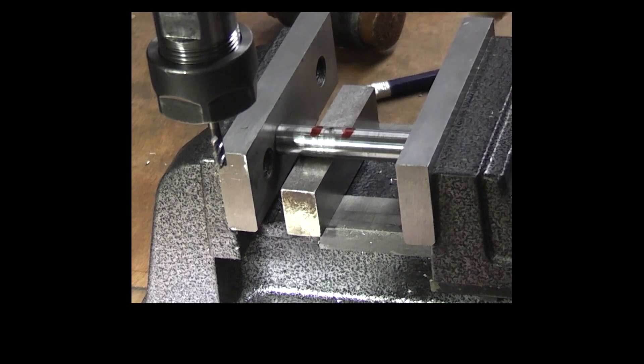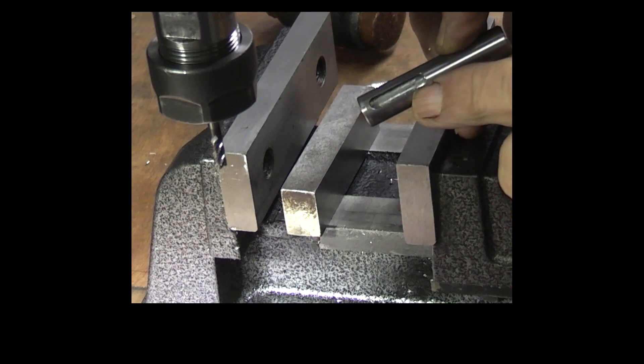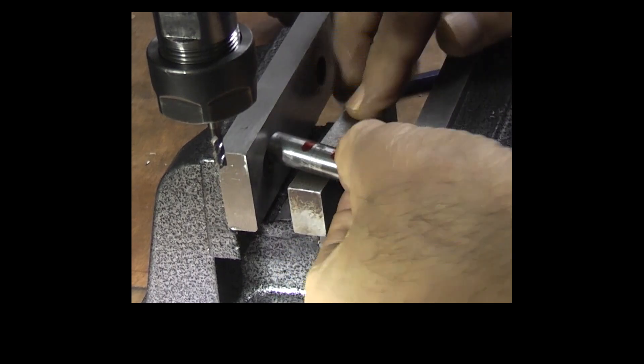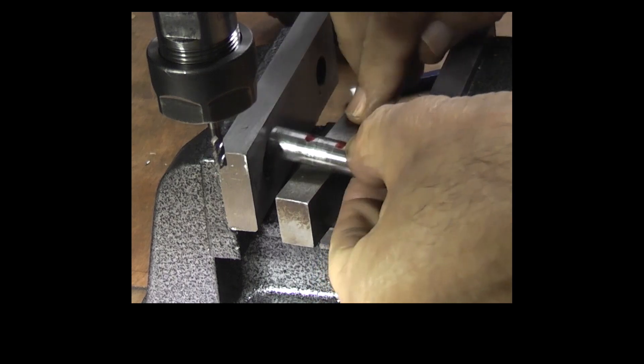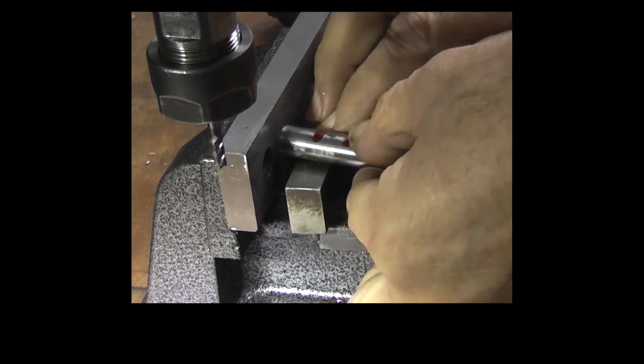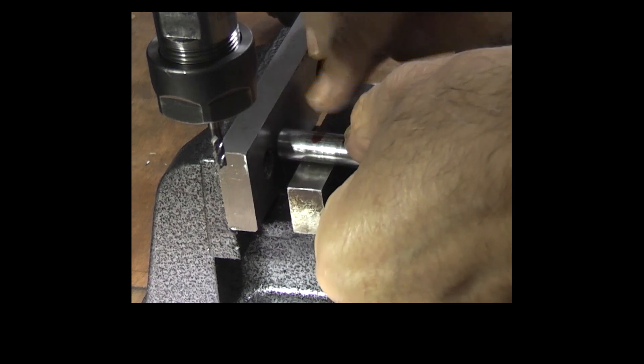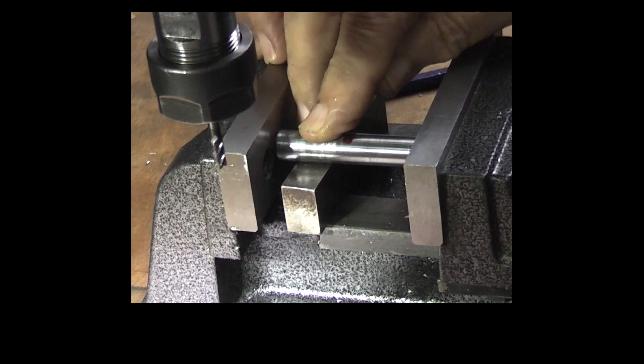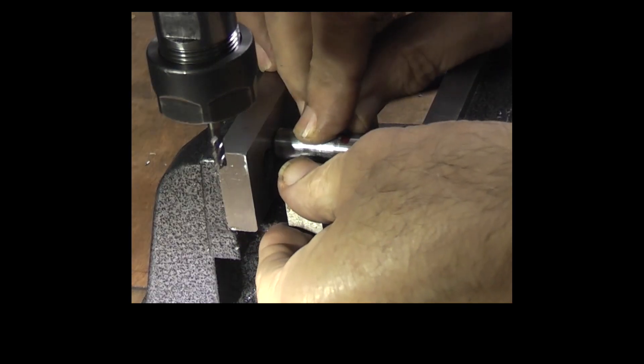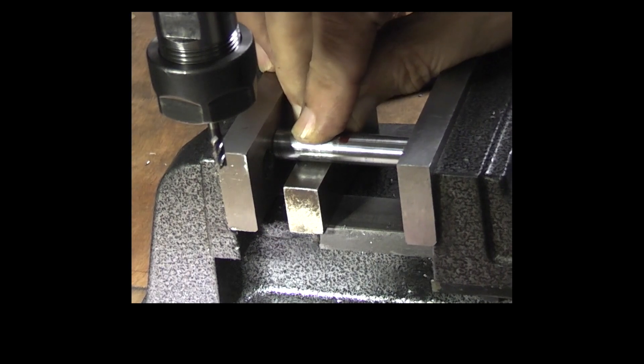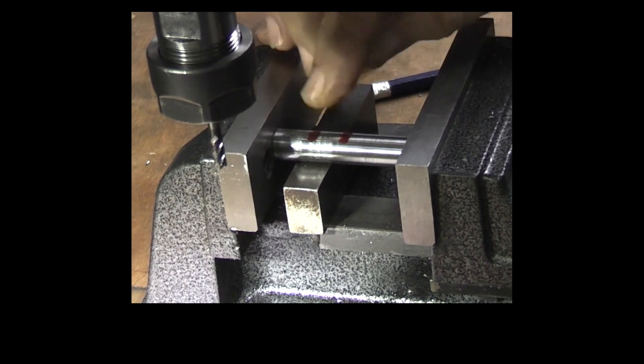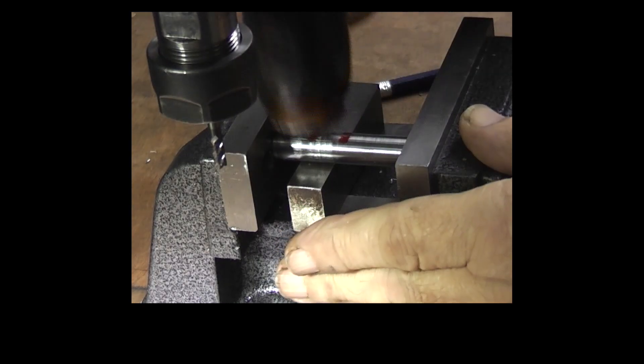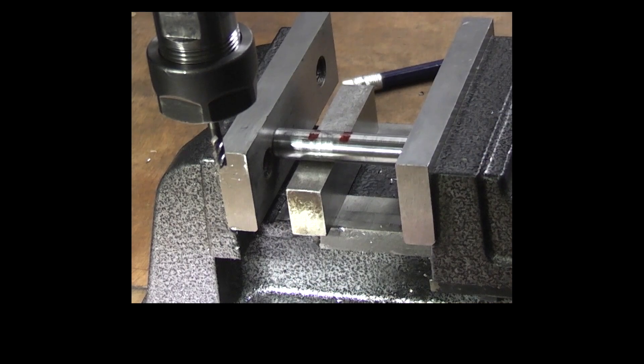The way I've set this up is on this side we've got the slot that we machined last time, so I'm just putting that on top of the parallel strip so that the slot is between the parallel, and that sets it square that way. And then just close the jaws and we're ready to machine a flat on between these two marks.